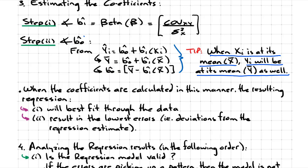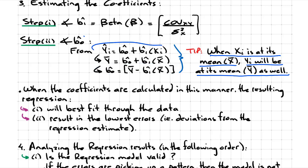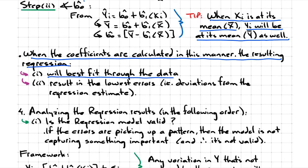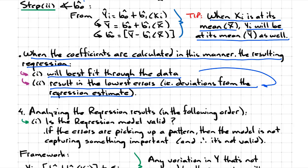Try not to memorize this formula, because you're bound to get a plus or minus mixed up and get the wrong answer. Instead, just start from the ground floor — the original regression framework. When the coefficients are calculated in this manner, the resulting regression will best fit through the data and result in the lowest errors, i.e., deviations from the regression estimate. If the line best fits through the data, those observations are as close as possible to the regression and the errors are minimized.